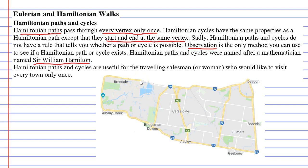Hamiltonian paths and cycles are really useful for salespeople. A salesperson will want to pass through every town only once as they visit and try to sell items. Looking at the map below, we've got towns like Brendale, Albany Creek, and Bridgman Downs. A vertex is placed for each town, and the salesperson wants to pass through each town only once — they don't want to pass through the same town twice.